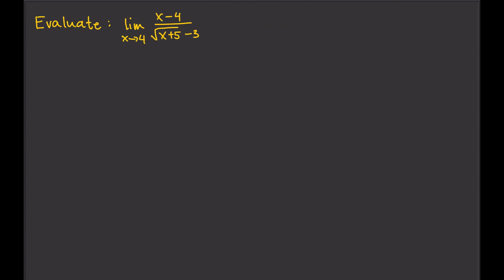In this video we are going to evaluate limits by rationalizing. Here we have an example. If we try direct substitution and just plug in 4 for x, what we will get is 0 divided by 0. If you plug in 4 in the numerator that's 4 minus 4. In the denominator, 4 plus 5 is 9, square root of 9 is 3, and 3 minus 3 is also 0. So you have an indeterminate form — 0 divided by 0. So what can we do? How could we find this limit?